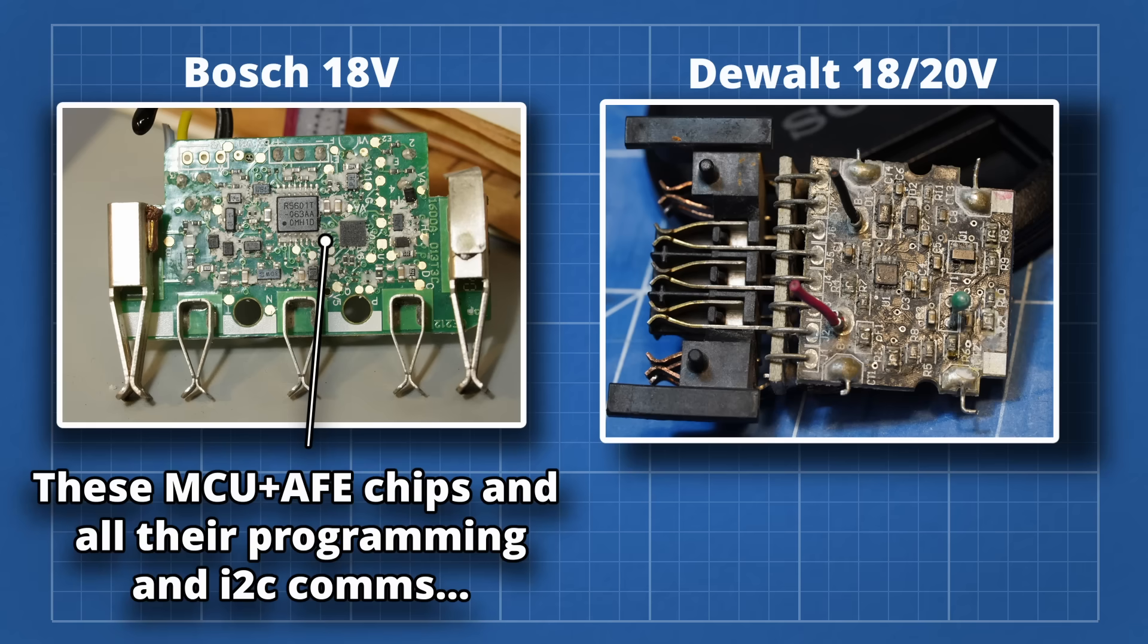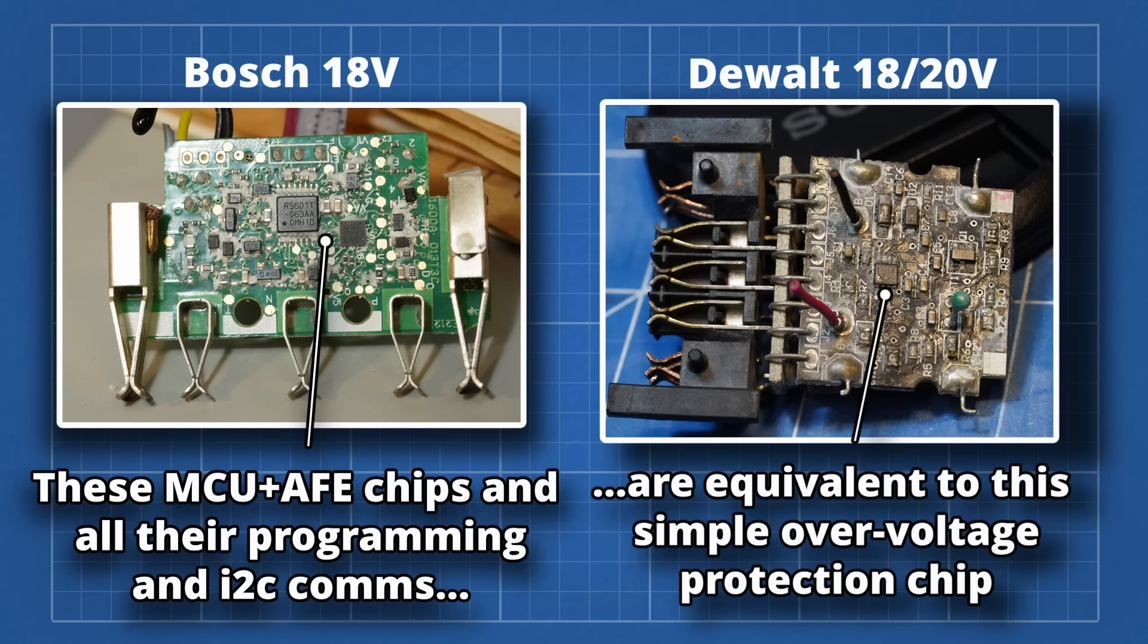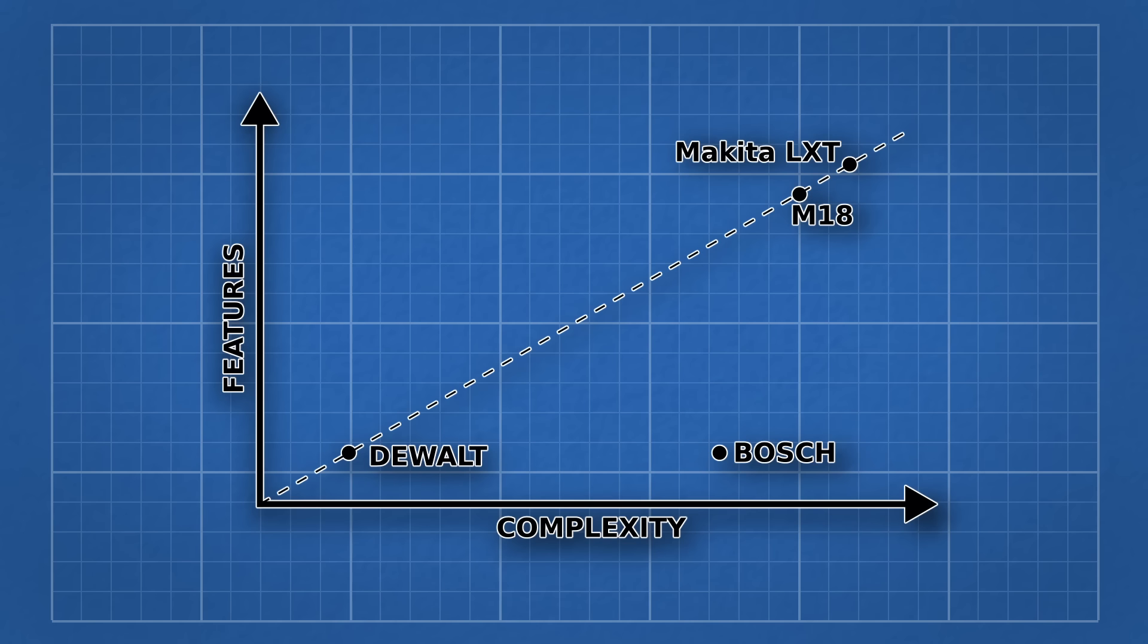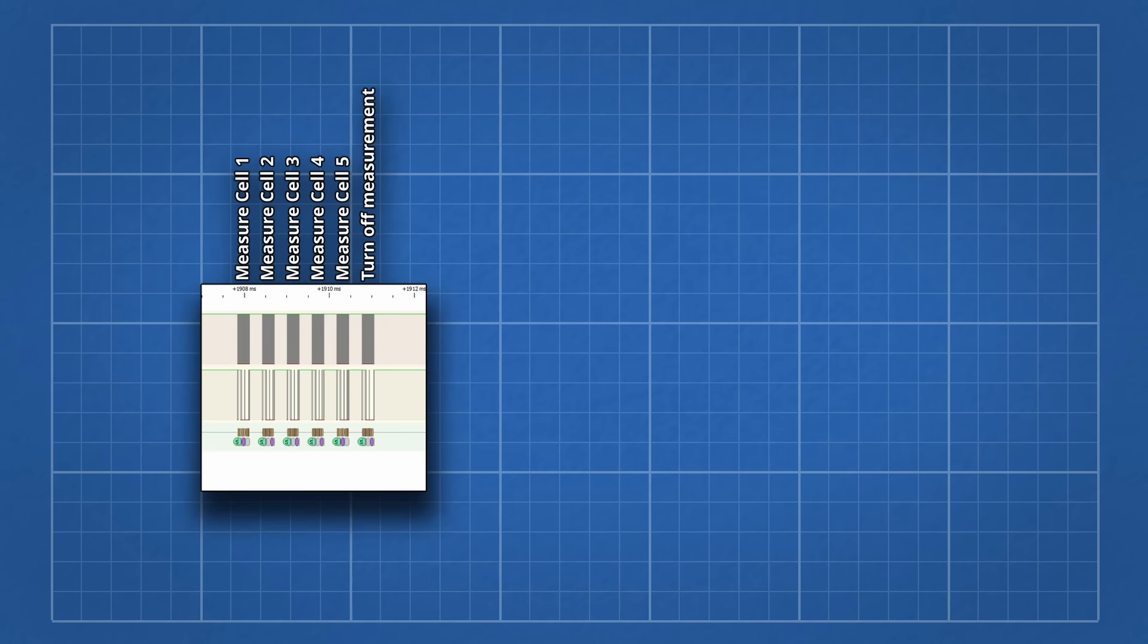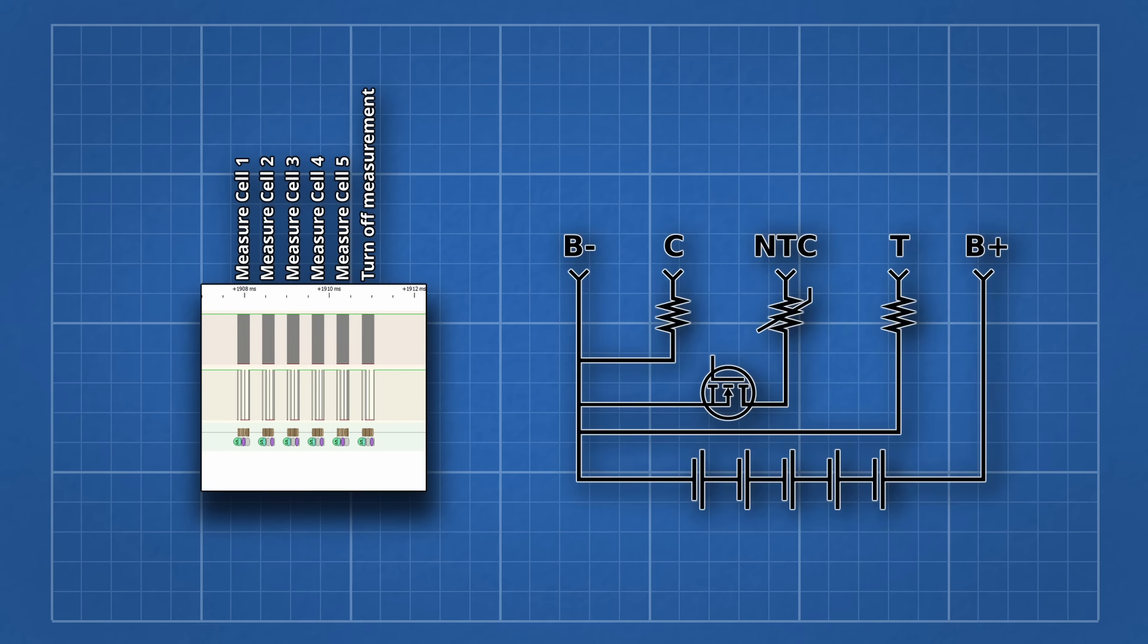From what I can tell, Bosch's fancy microcontroller and analog frontend don't do anything apart from overvoltage protection during charge, which DeWalt achieves with a simple overvoltage protection chip. Bosch's design has about the same complexity as Milwaukee and Makita, but with much less features. They could improve it quite easily by adding better low voltage protection during discharge. They already measure all the cells when you squeeze the trigger, and they already have the hardware to open circuit the NTC, so that's easy.